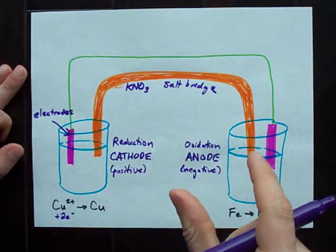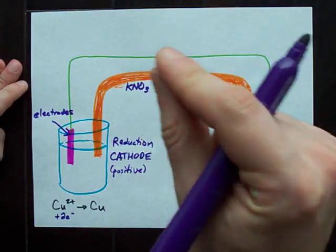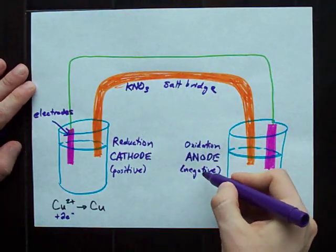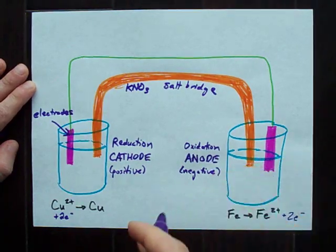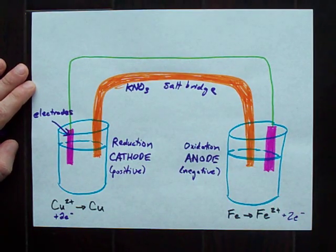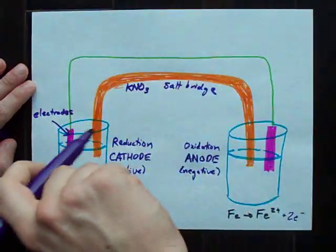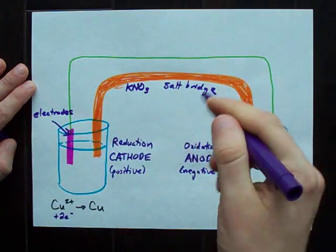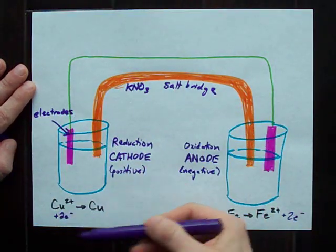The anode is often referred to as the negative electrode, and the cathode is often referred to as the positive electrode. When you have a AA battery or a D cell battery, and one says plus and one says minus, the negative side is the side where the electrons are coming out of because it's losing electrons. You're pumping the electrons through your device back into the plus side, because that's the side that needs to gain the electrons.